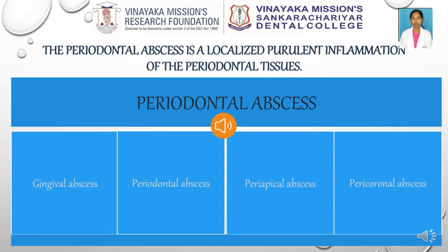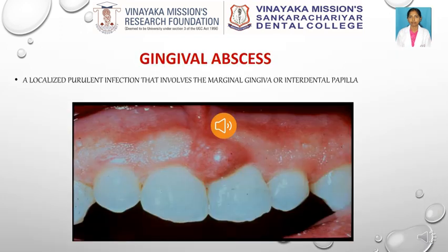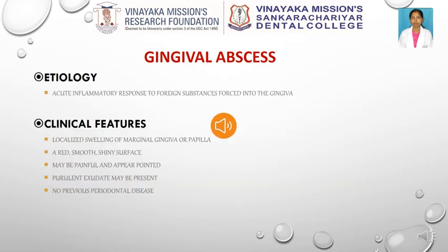An abscess is usually confined within a cavity and the formation of pus is called suppuration. We will be discussing mainly about the gingival abscess, periodontal abscess, periapical abscess, and pericoronal abscess. The first one is the gingival abscess. It is a localized purulent infection which is mainly confined within the interdental papilla and the marginal gingiva. The main etiology may be any foreign substance like plaque or food particles forced into the gingiva, leading to acute inflammation.